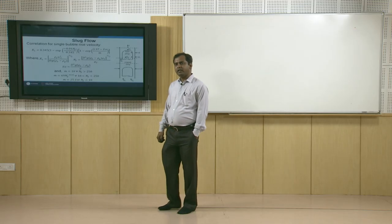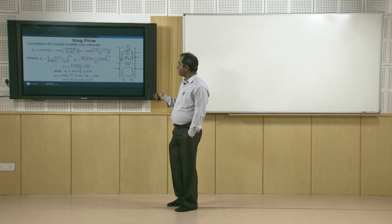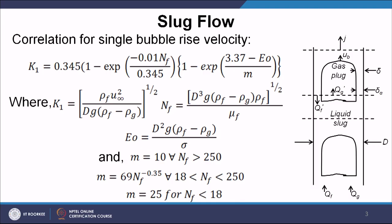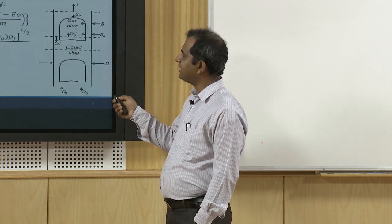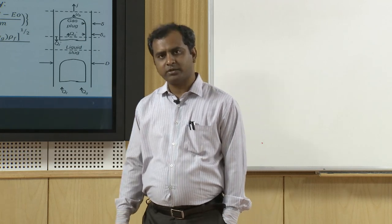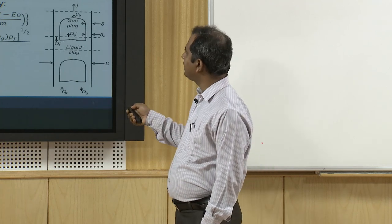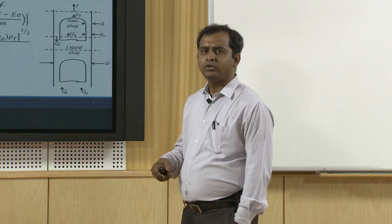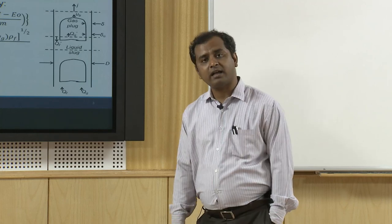To give a better understanding of slug flow, I have shown a schematic here. In this schematic, we have a Taylor bubble as a gaseous plug, and in between two gaseous plugs we have a liquid slug. In a real slug bubble regime, lots of satellite bubbles precede the gaseous plug, but for simplicity we have eliminated those satellite bubbles and are only dealing with the gaseous plug followed by a liquid slug — a repetitive pattern of gaseous plug and liquid slug.